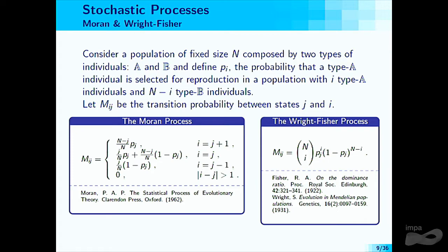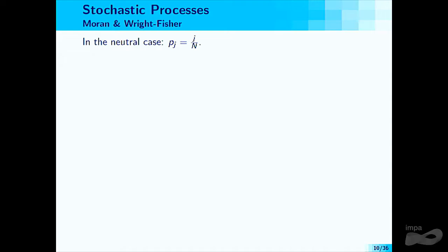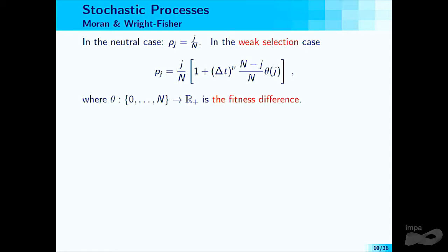These are the two main models used in finite-population evolutionary biology. In the neutral case — no advantage to being blue or red — the probability of selecting a blue ball equals exactly the fraction of blue balls in the urn. The weak selection approximation says this probability should deviate from the neutral case according to the time step delta t and a fitness function theta, which has a direct biological interpretation as the fitness difference between the two types.